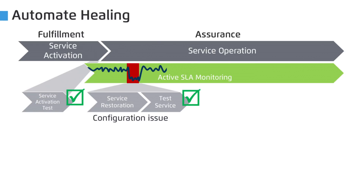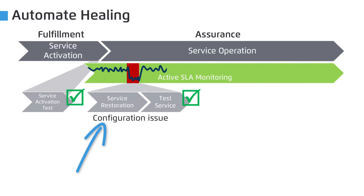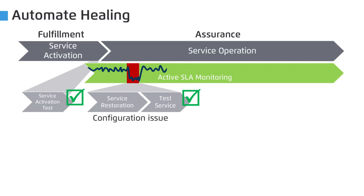The healing use case starts when NetRounds detects an SLA violation. This triggers Cisco Network Services Orchestrator, or NSO for short, to check the configuration of the devices and compare to the service intent. Discrepancies are found and NSO restores the service. The service is then tested again before it is considered fully restored.